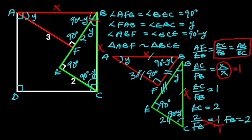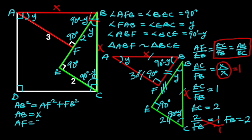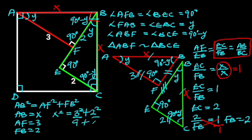Going further, we are going to find X in triangle ABF using Pythagoras' Theorem. From Pythagoras' Theorem, AB squared is equal to AF squared plus FB squared. From triangle ABF: AB is X, AF is 3, and FB is 2. Plugging in these values, X squared equals 3 squared plus 2 squared, that is 9 plus 4, which equals 13. Hence, X squared is 13.